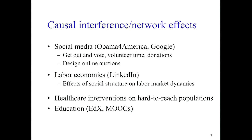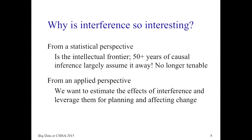Why is this interesting? From a statistical perspective, it's the intellectual frontier — through 50 to 80 years of literature on causal inference, people largely assumed interference away. There are a few exceptions, but in many applications interference is obviously present. From an applied perspective, people want to estimate the effect of interference to leverage it and affect future changes. They want a causal estimate because they think it will change how people behave.